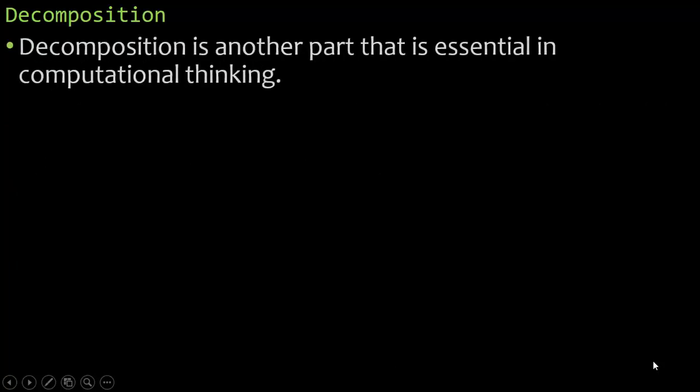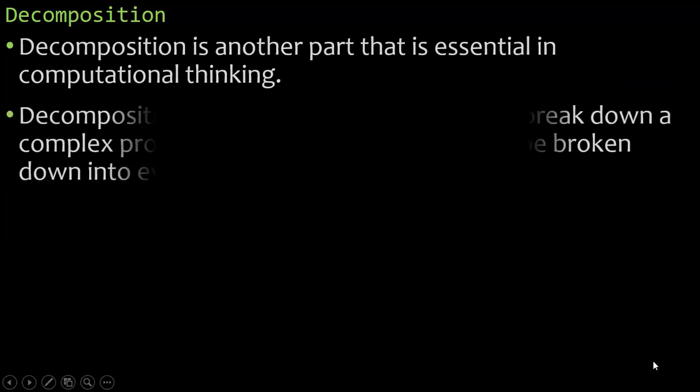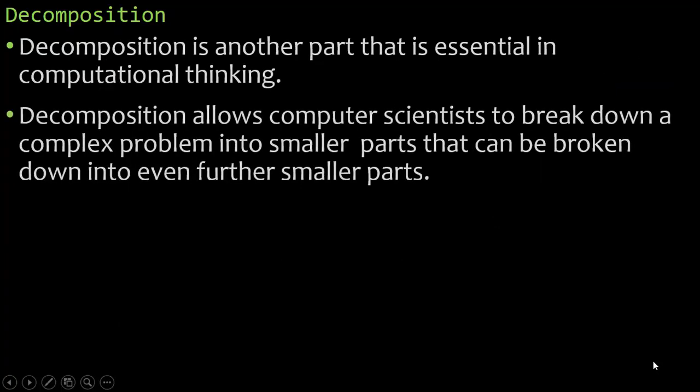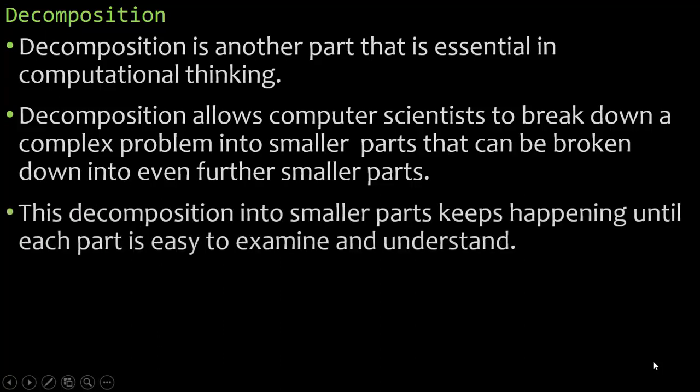And this brings us into decomposition. Decomposition is another part that's essential in computational thinking. Decomposition allows computer scientists to break down a complex problem into smaller parts that can be broken down into even further smaller parts. This decomposition keeps happening until each part is easy to examine and understand, and this can lead to pattern recognition.